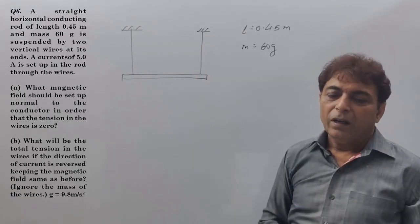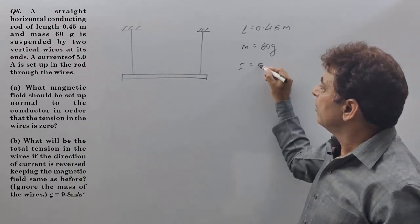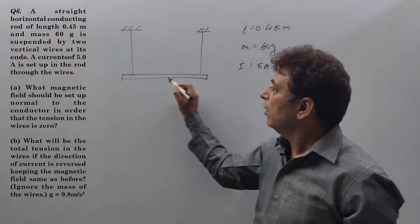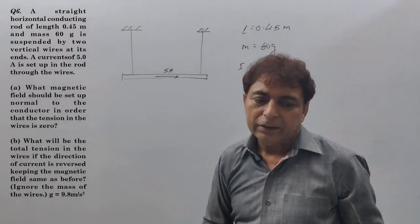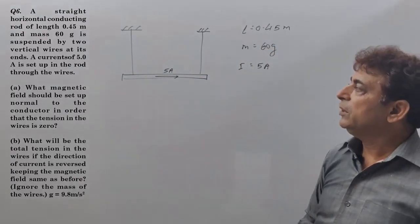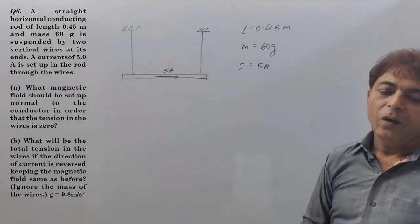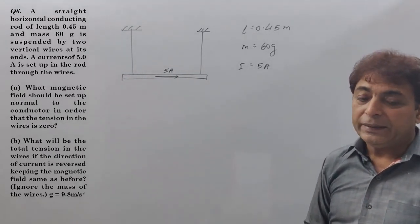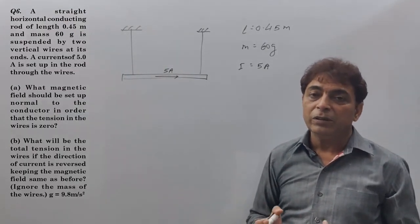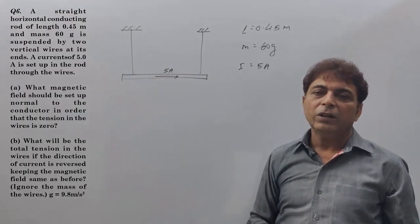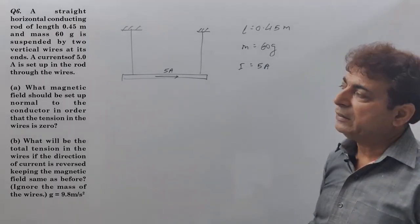A current of 5 ampere is set up in the rod through these wires. What magnetic field should be set up normal to the conductor in order that the tension in the wires is zero?